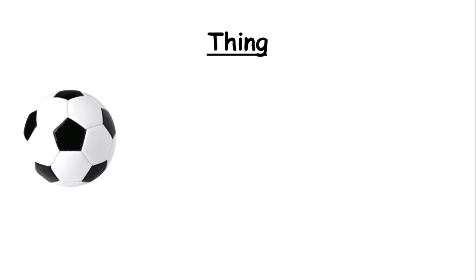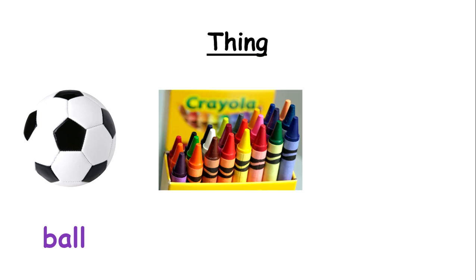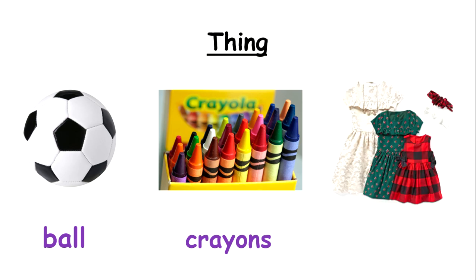Now let's look at some things. What is this? A ball — so 'ball' is a noun. These are crayons — more than one, so we add the S: crayons. 'Crayons' is a noun. And here we have clothes — the clothing that we wear. When you name each of them individually, all of that is a noun. So nouns can name things.